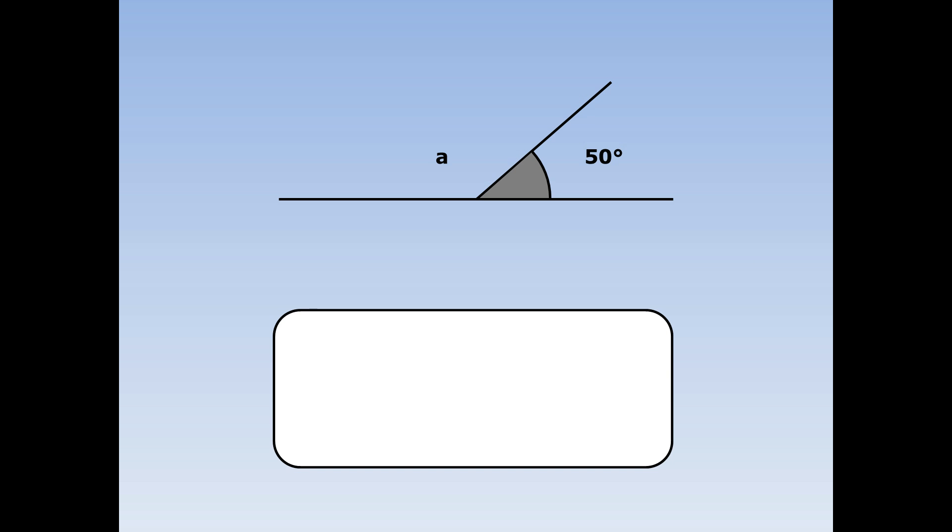If I take this straight line, A and 50 add up to 180 degrees. So to find out what A is, I do 180 take away 50 equals 130. So A equals 130.